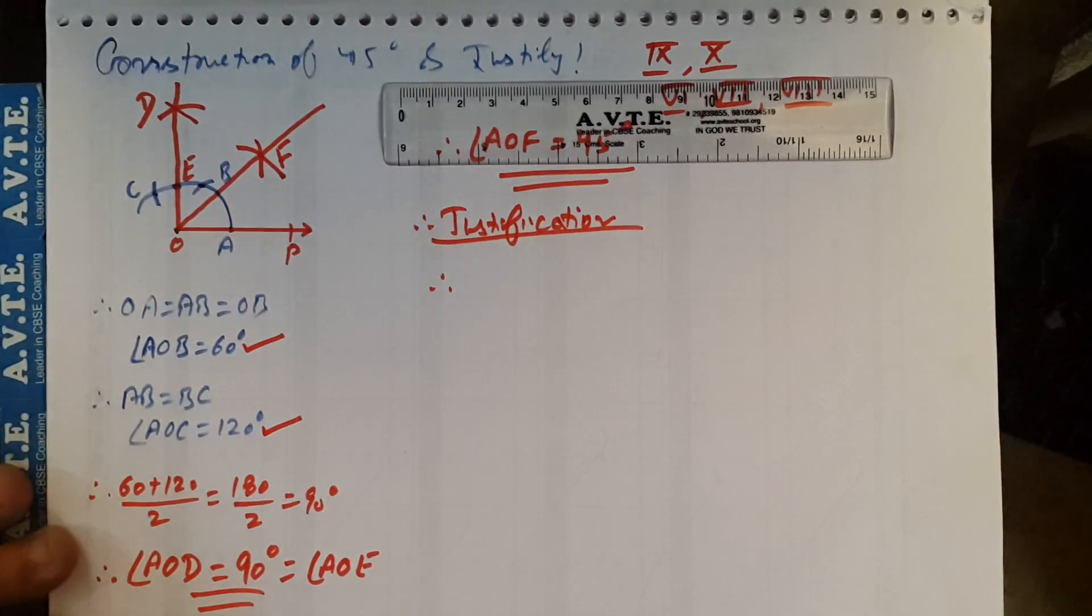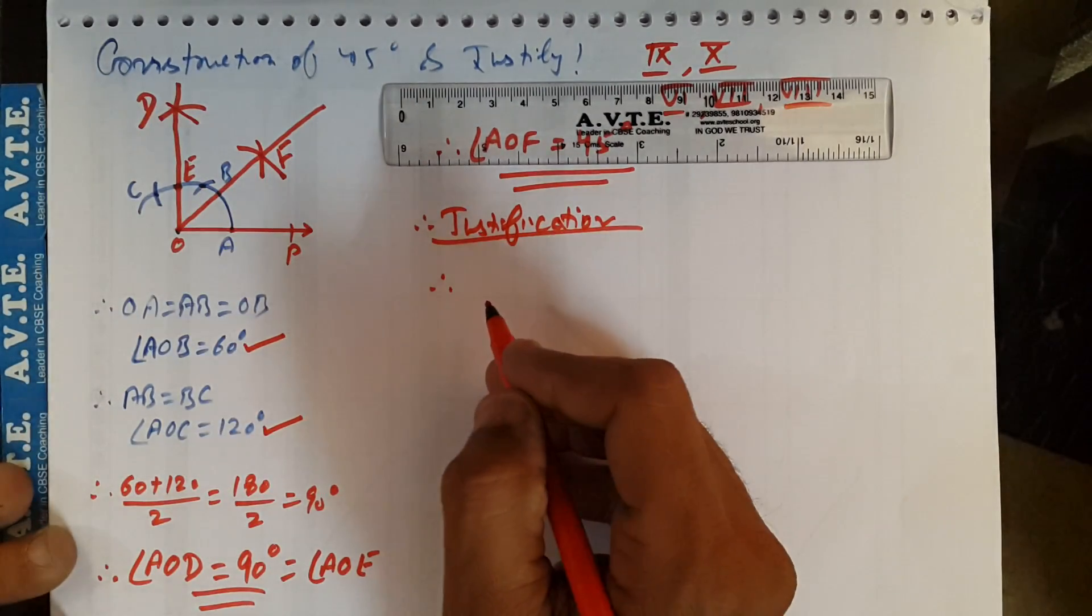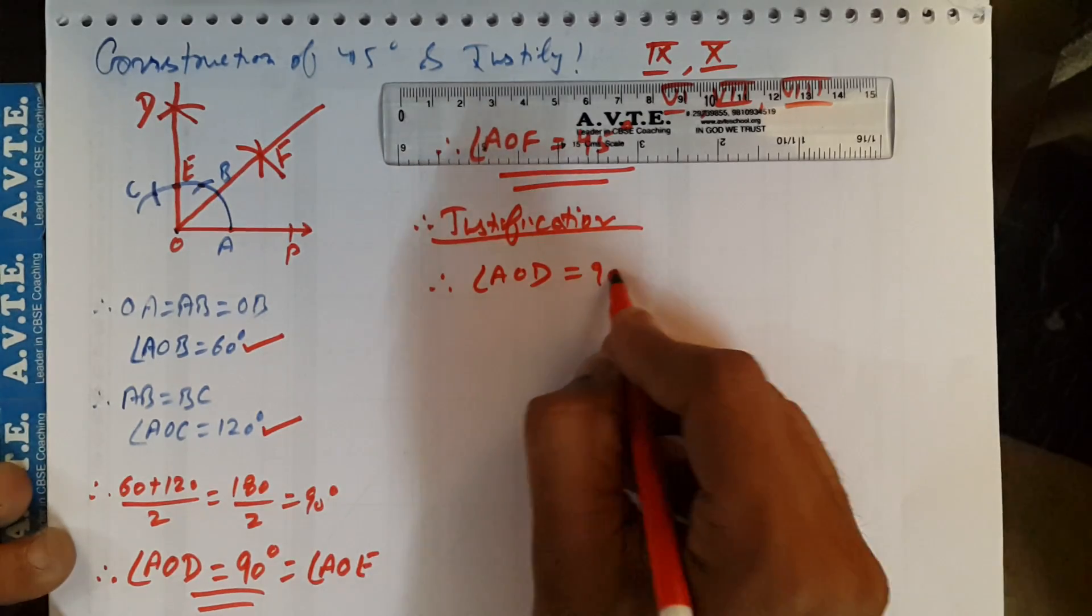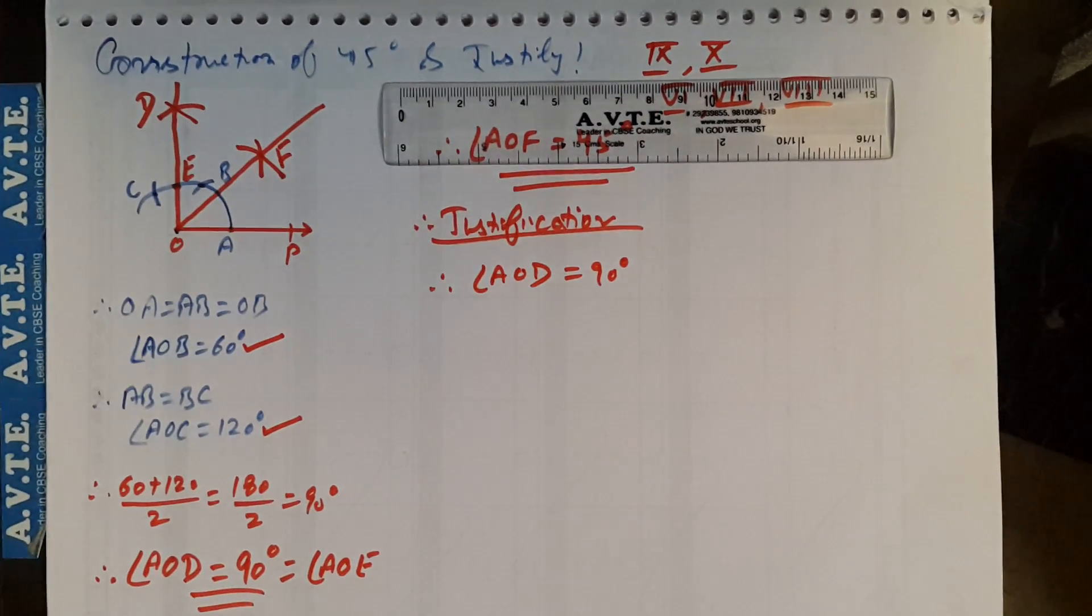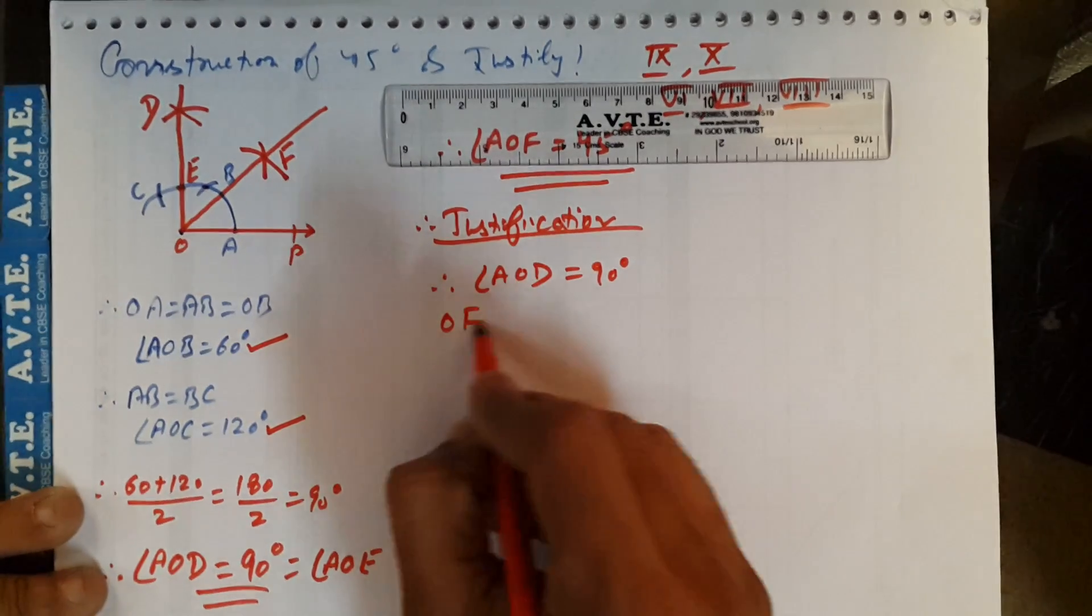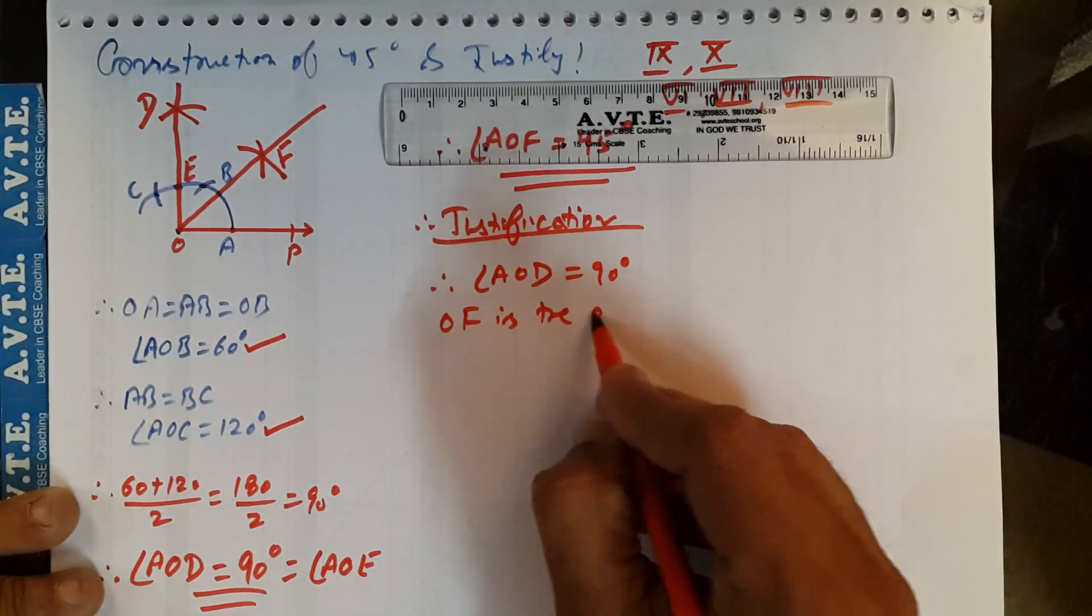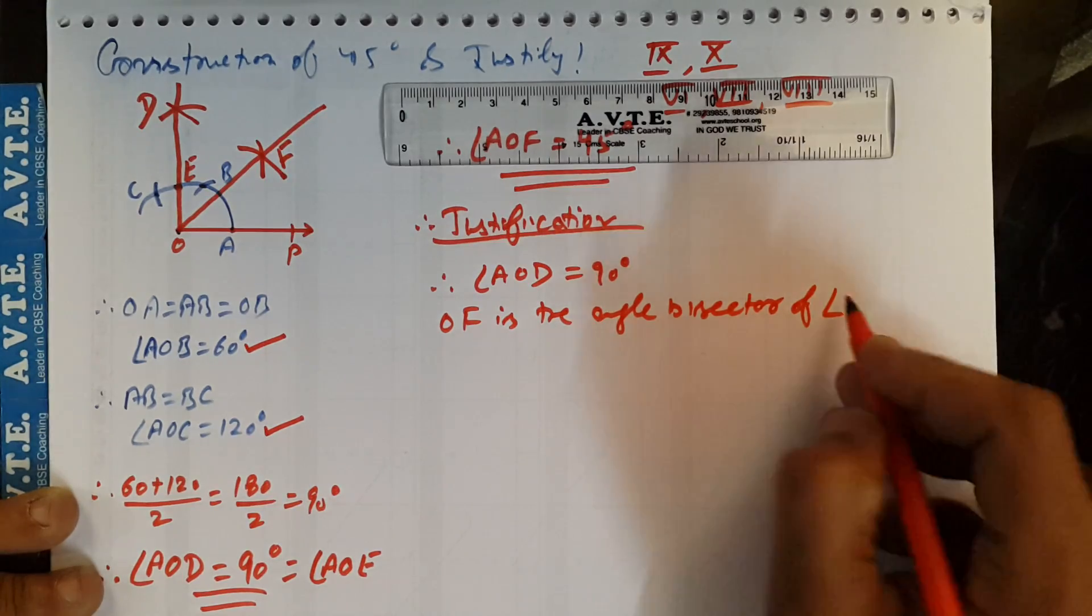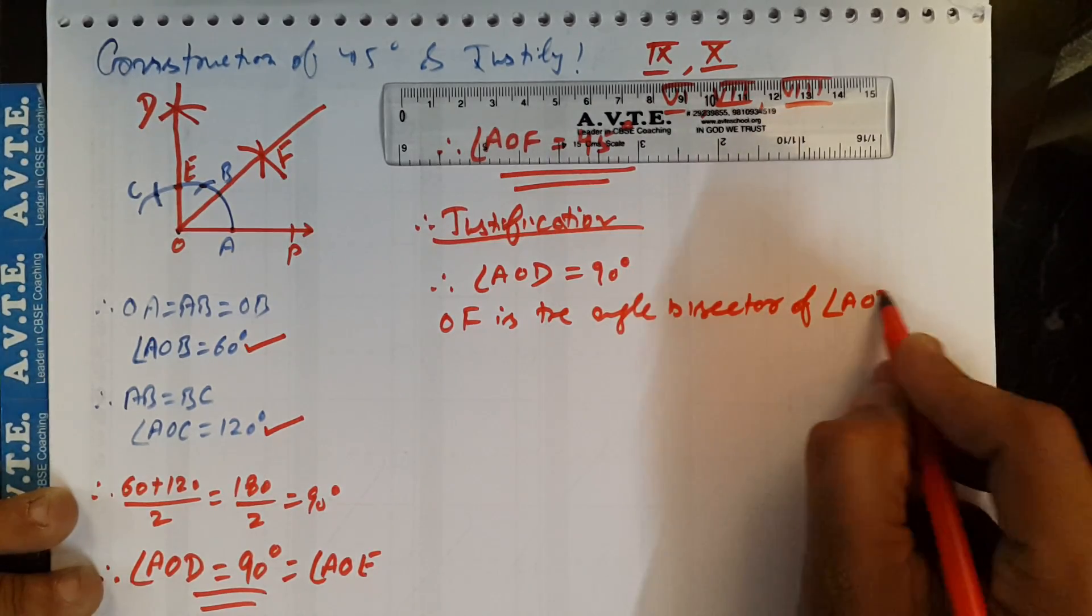You know that angle AOB is 90 degrees. And by construction, we have just, OF is the angle bisector of angle AOB.